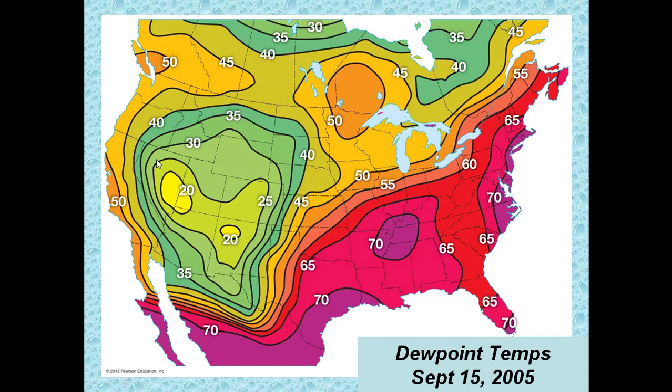Dew points in the 20s would be extremely dry air. That means that if you're in the desert, the temperature would have to cool to 20 or 25 degrees Fahrenheit. And if the temperature is 100 degrees during the day, it has to cool off 80 degrees overnight, which is pretty unrealistic.